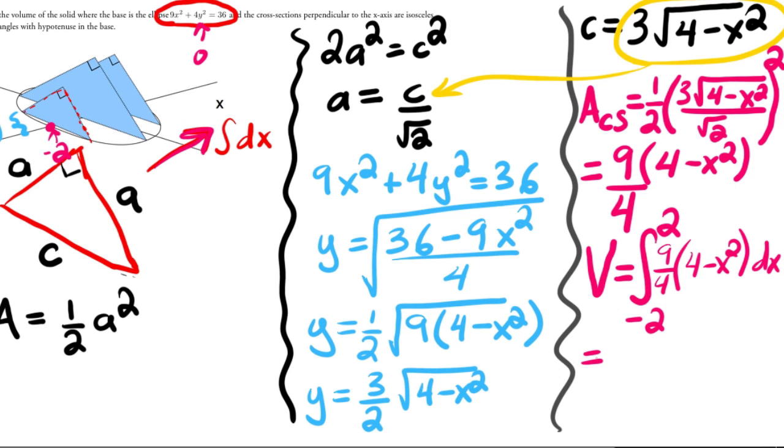We're going to integrate 9/4 times (4 - x²) dx. When I do that, when all is said and done, this whole thing is equal to 24. We'll get the anti-derivative, top minus bottom. I ran out of room, but you guys can finish it off from there.